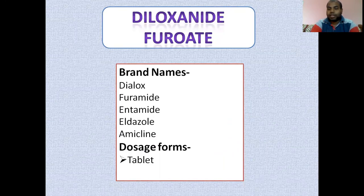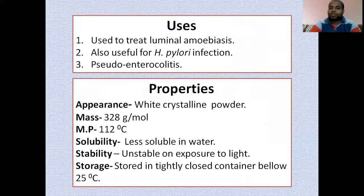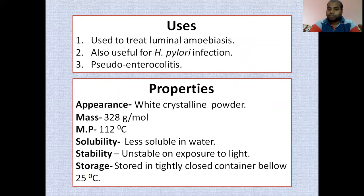The next individual agent under anti-amoebic drugs is Diloxanide Furoate. It is available only in tablet form under brand names such as Dialox, Furamide, Entamide, Eldazole, and Amicline. Eldazole is the Diloxanide Furoate combined with Albendazole. It is used in luminal amoebiasis — the form of amoebiasis caused by Entamoeba histolytica in the luminal area — as opposed to systemic amoebiasis.